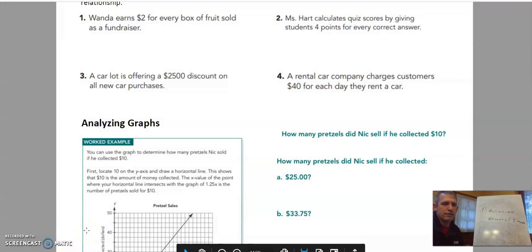Wanda earns $2 for every box. So the amount of money I make depends on the number of boxes I sell. So this is going to depend on this. So this is going to be our dependent. And this is going to be our independent.